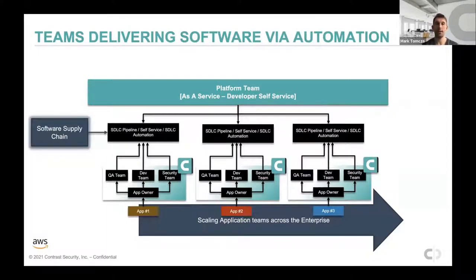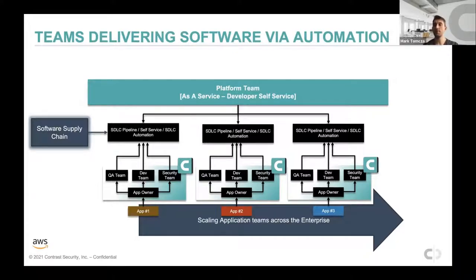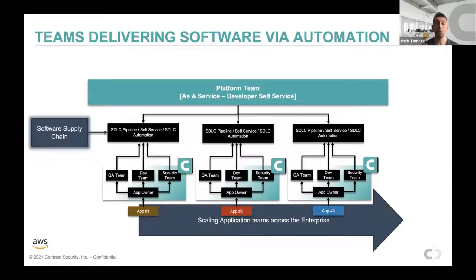Here's a graphic representation of how delivery teams actually deliver software via automation consumption. You can see application teams one, two, and three — these are cross-functional teams. They have an application owner or product owner who creates work for the rest of the team in terms of enabling the business logic needed for enhancements. They work with different business owners and stakeholders to get enhancements in-house. You have a QA team, dev team, and security team — their job is to get software out the door via work items. Work comes in, work comes out.